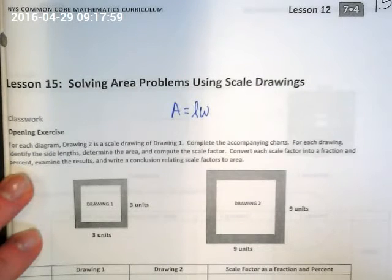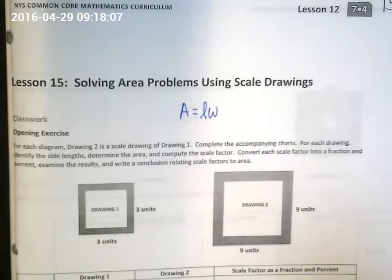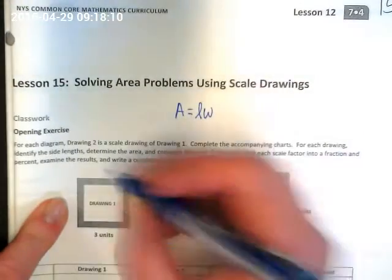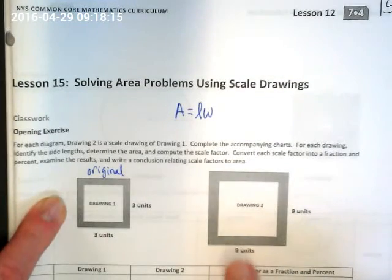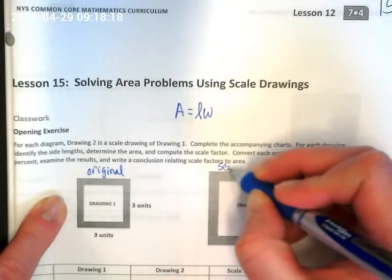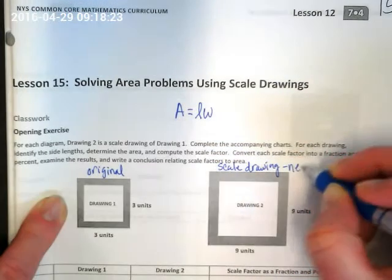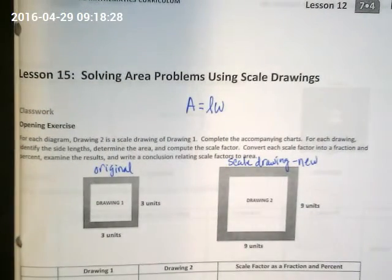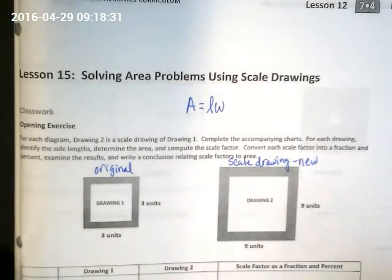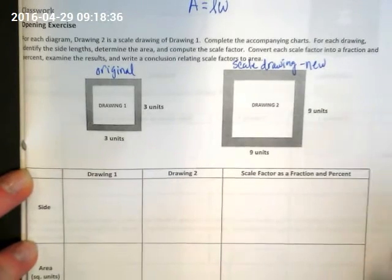So for each diagram, Drawing 2 is a scale drawing of Drawing 1. Yesterday we were kind of playing around what's the original, what's the new drawing. Today in this problem, this is the original and this is the scale drawing of it for the new drawing. For drawing one, what's our side length?